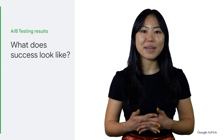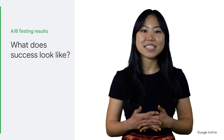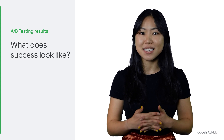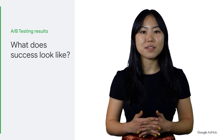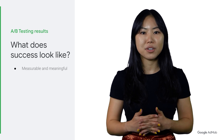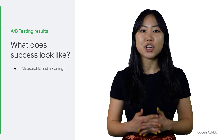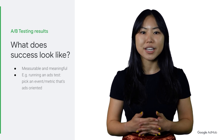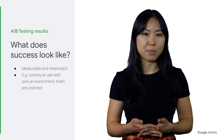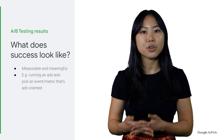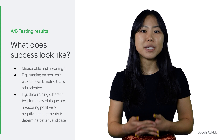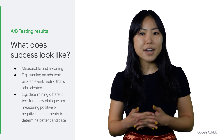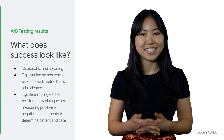Now that you have worked out the mechanics of your A-B test and the time needed, how can you determine if your A-B test has been successful? Always ensure that your results are measurable and meaningful. We recommend you run a test on the best performing ads with AdMob. To start, pick an event or metric that is ads-oriented — for example, AdImpressionEventCount or AdRevenue. Or if you're trying to determine different texts for a new dialog box, measuring positive or negative engagements would help you determine the better candidate.